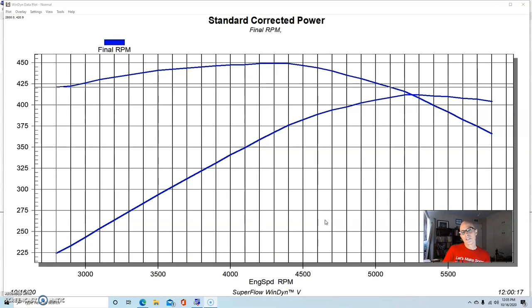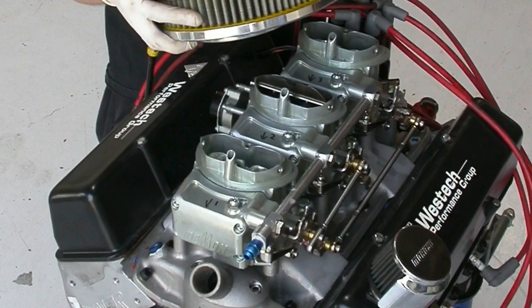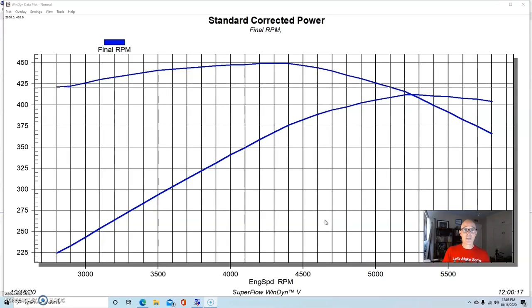That's where these exotic induction systems come in. If you have a tunnel ram or a cross ram or in this case a tri-power setup, it's not the beige suit. The problem is, does it work as well as your beige suit? We know that it looks cool because a tri-power setup, let's face it, a two-barrel is pretty good, a four-barrel is twice as good as a two-barrel.